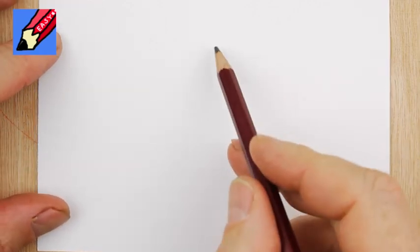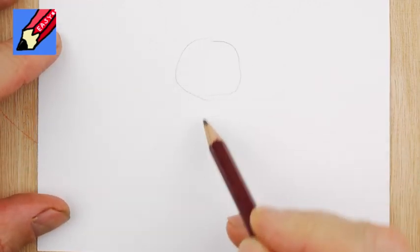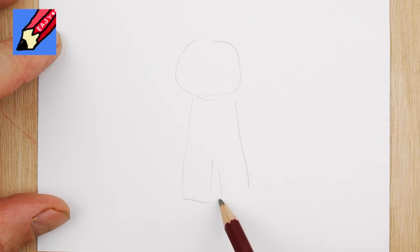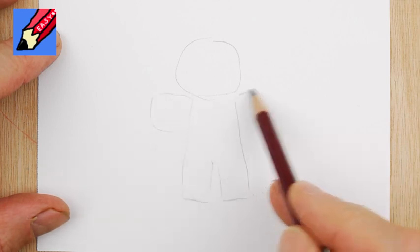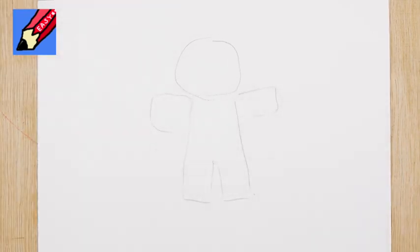To draw a gingerbread man real easy, you need a circle and then a body shape like that, and then arms coming out like that.